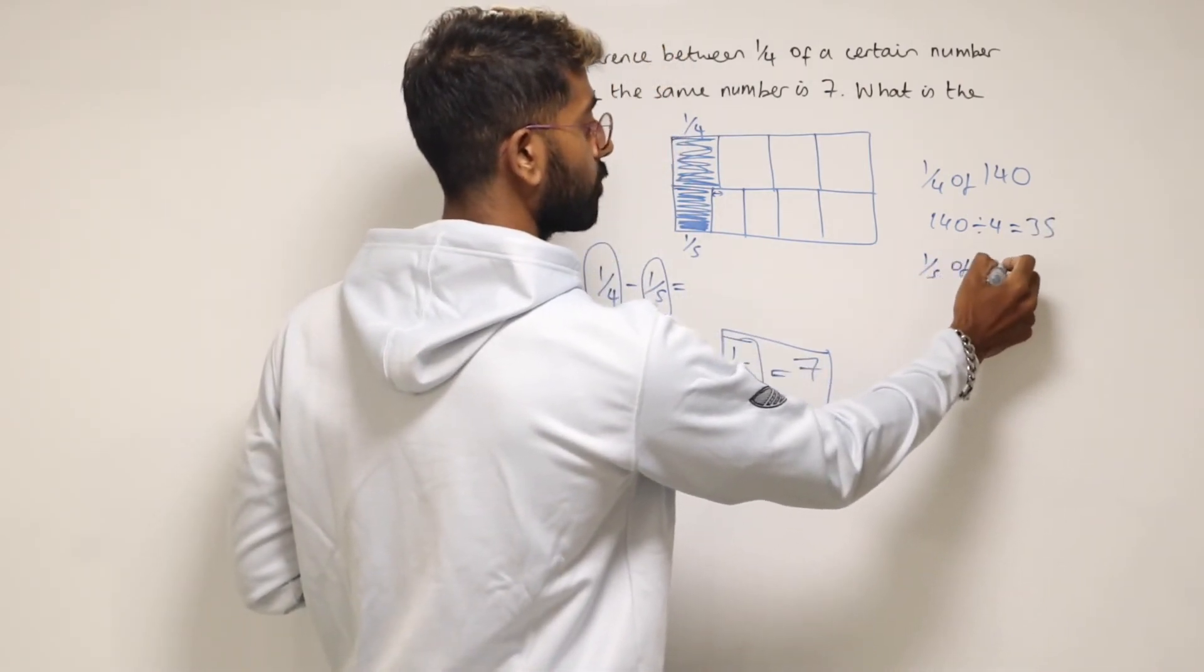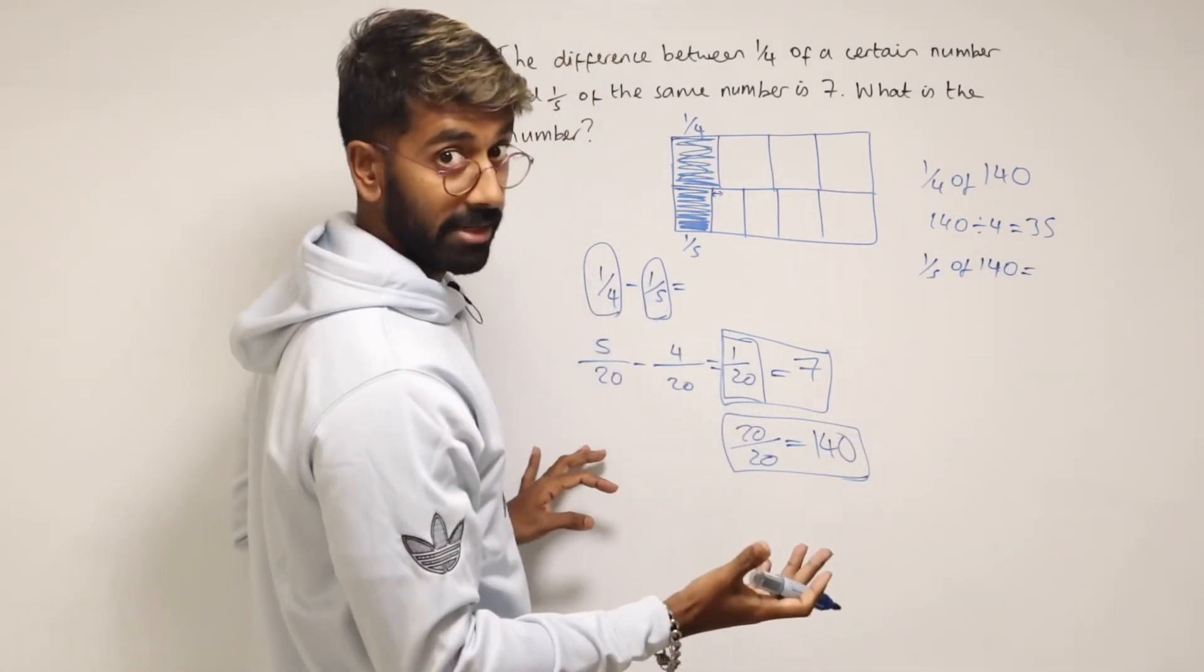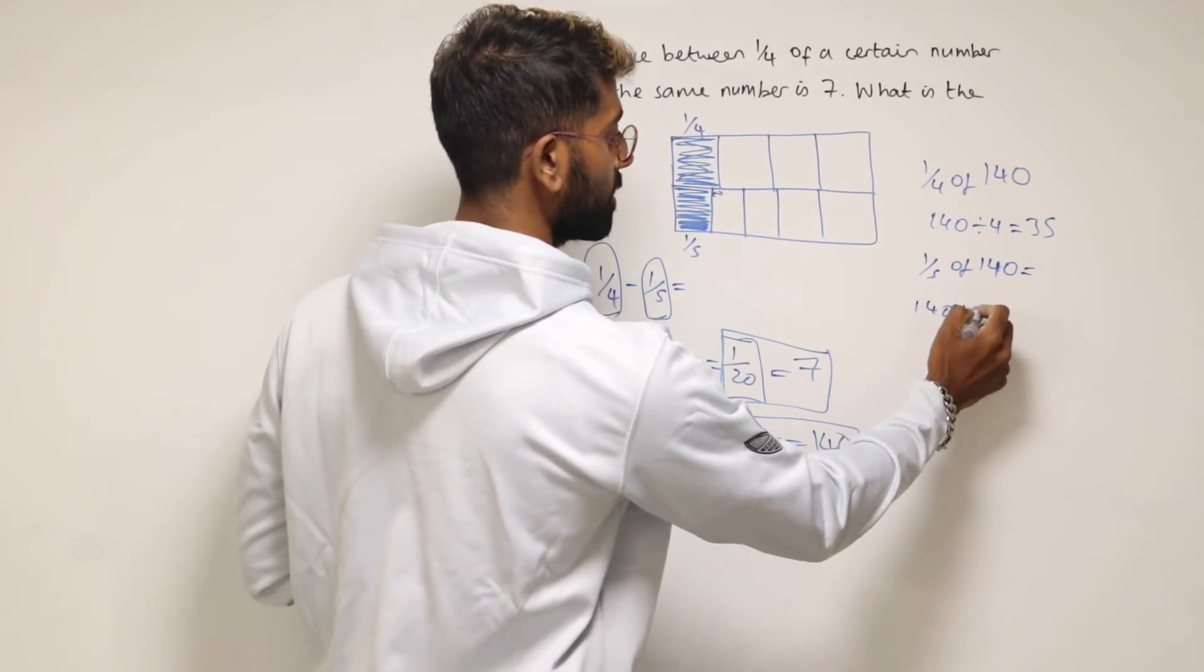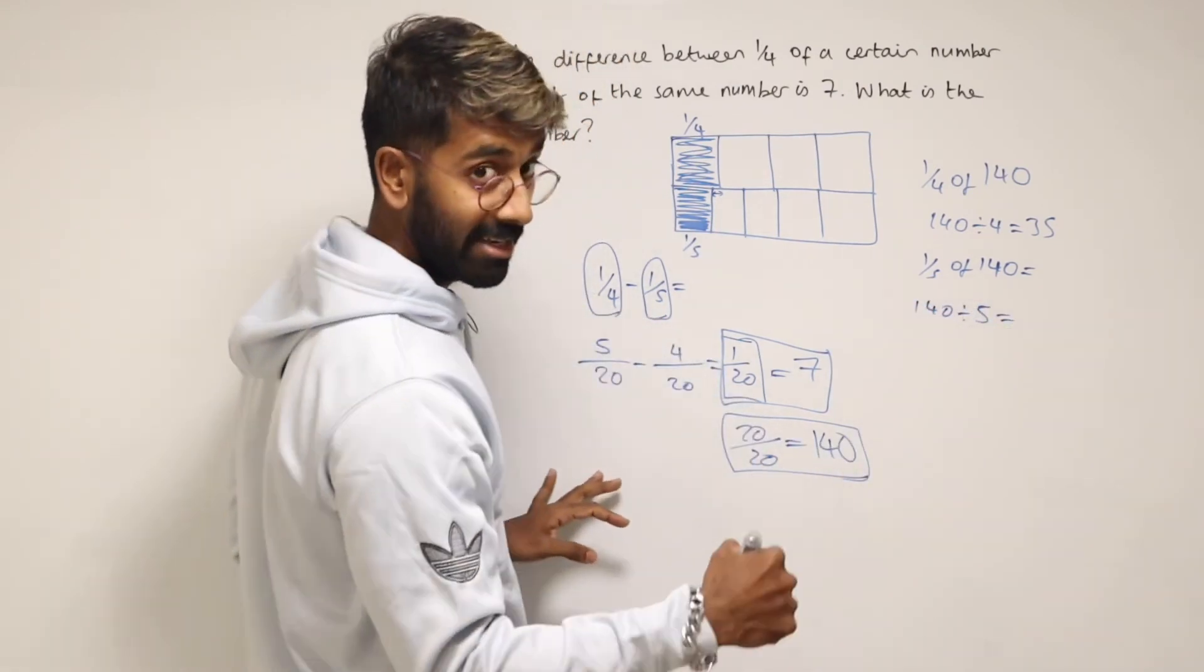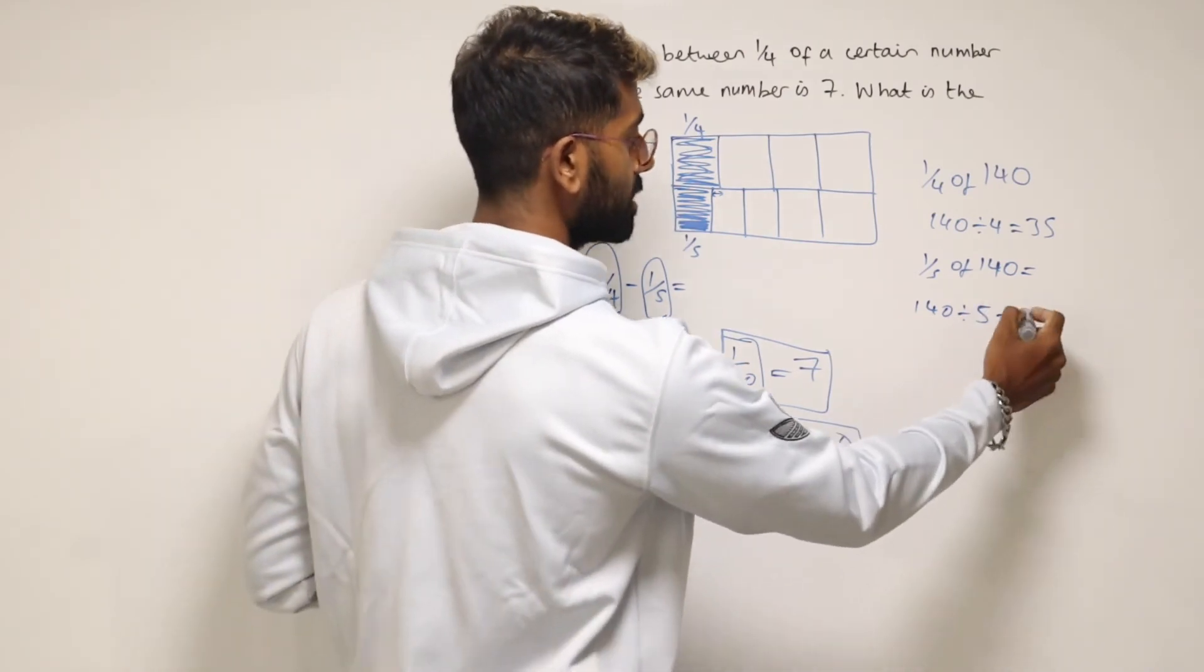And then let's find one fifth of 140. So to do that, let's divide it by 5. So to divide by 5, 140 divided by 5, we could divide by 10 first and then just double it. So divide by 10 is going to give me 14, double it, 28.